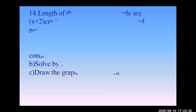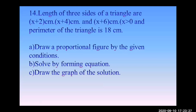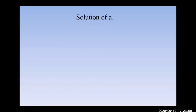Problem 14: The lengths of three sides of a triangle are x plus 2 cm, x plus 4 cm, and x plus 6 cm, where x is greater than zero. The perimeter of the triangle is 18 cm. Draw a proportional figure based on the given conditions, solve by forming an equation, and draw the graph of the solution.